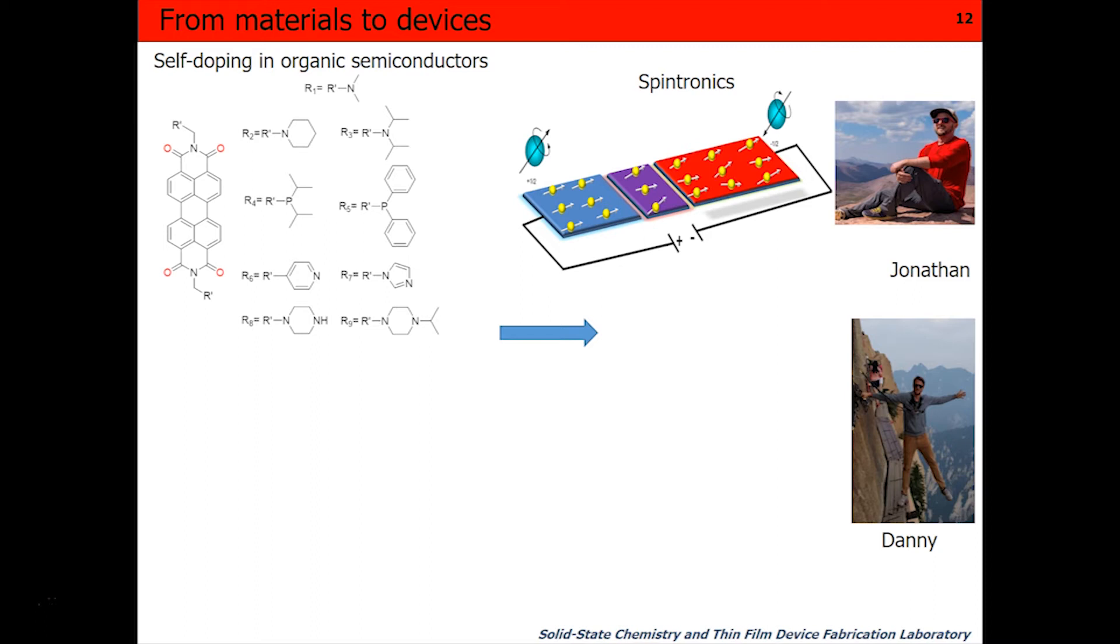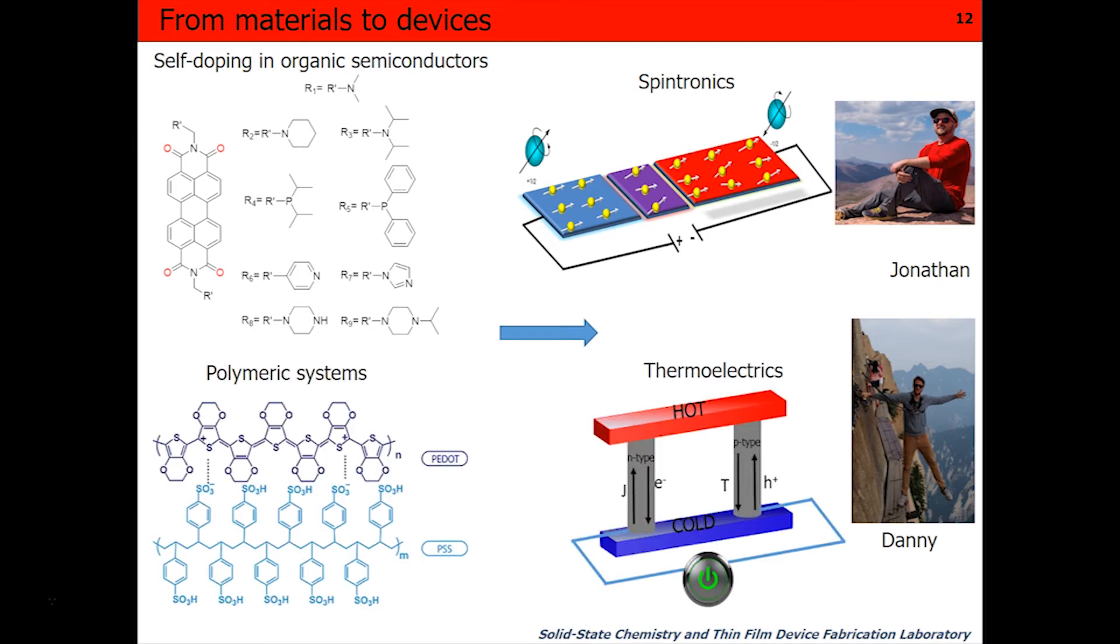The thing is that even though electrons have charges, they also have spins. You can use the spin properties of materials to make spintronic devices. Same thing with polymeric systems. We can have the formation of thermoelectric devices which convert heat into electricity. Very quickly, I'm going to talk about that for the rest of my talk.